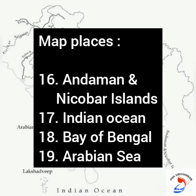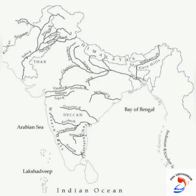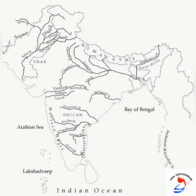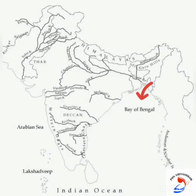At the right bottom corner of the map you can see some islands — that is Andaman and Nicobar Islands. Mark Andaman and Nicobar Islands. Now mark Indian Ocean below Sri Lanka. Write Bay of Bengal, which is on the east side, and write Arabian Sea on the west.